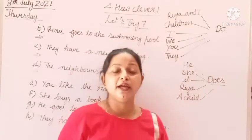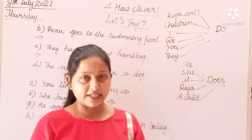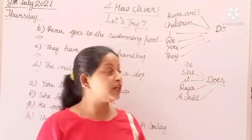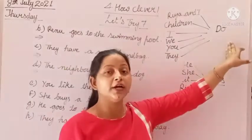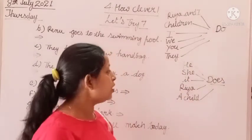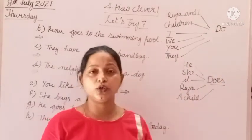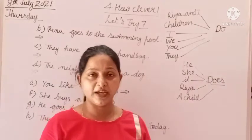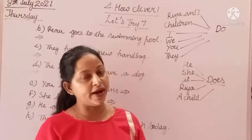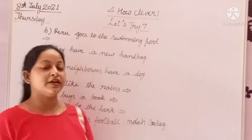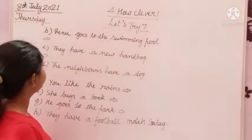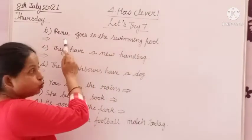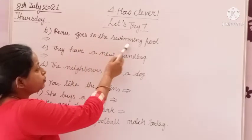If we make an asking sentence using do, we will put do before the subject. Now I am going to make asking sentences from statements using do and does. First of all, we will read the statement. The statement is: Renu goes to the swimming pool.